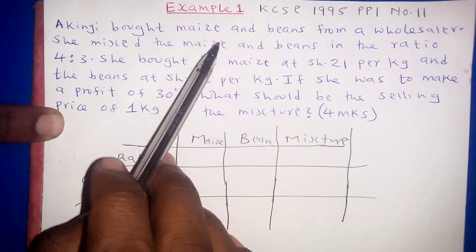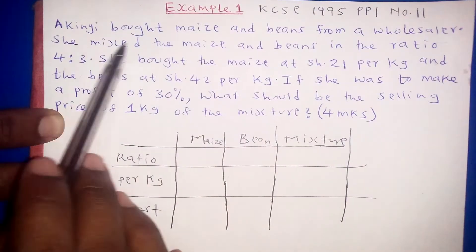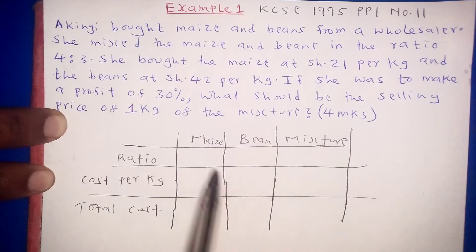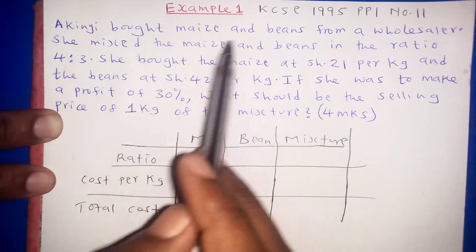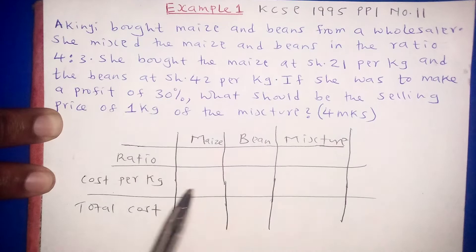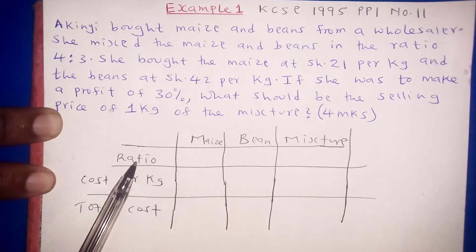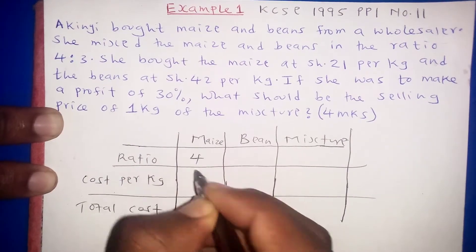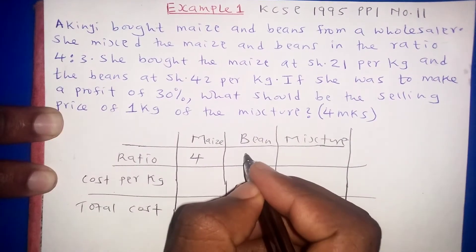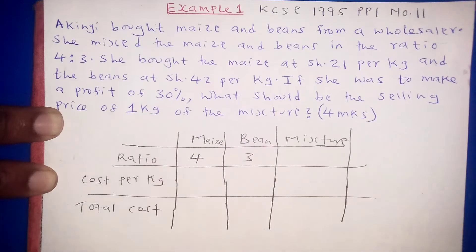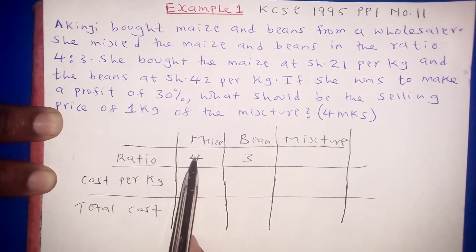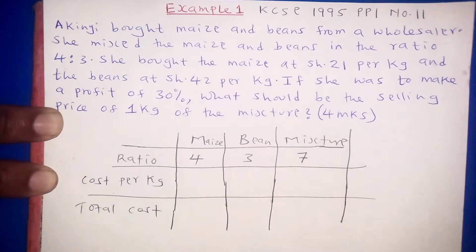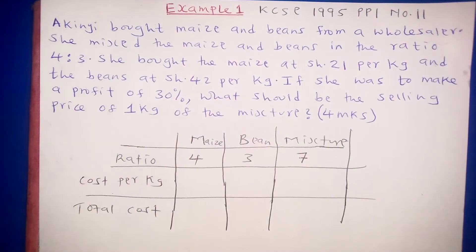Akinyi mixed maize and beans in the ratio of 4 to 3. This means the ratio of maize is 4 and the ratio of beans is 3. The mixture will have the total ratio, so 4 plus 3 gives a total ratio of 7.